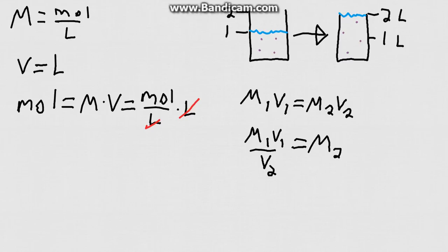If we want to define what that molarity is, we would say 4 moles per liter times 1 liter divided all by 2 liters. This is going to end up being 2 moles per liter.